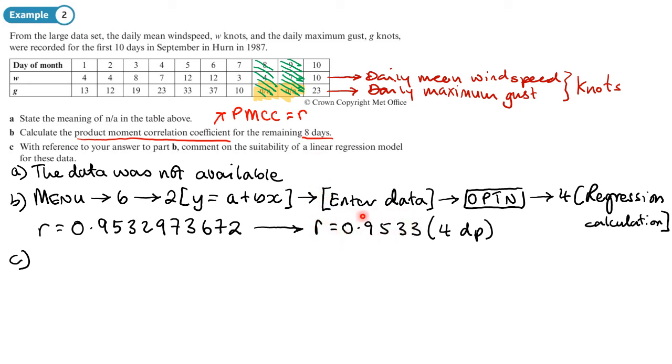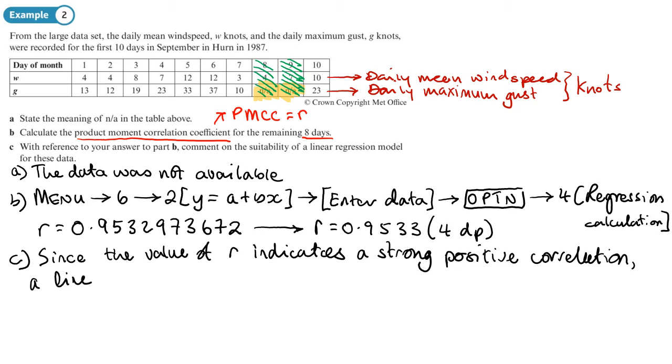So I would say that we have a very strong positive correlation. So a linear regression model would be suitable because the points almost lie on a straight line. So we'll just write that down. So since the value of R indicates a strong positive correlation, a linear regression model would be suitable in this case.